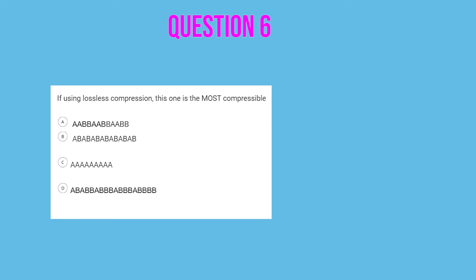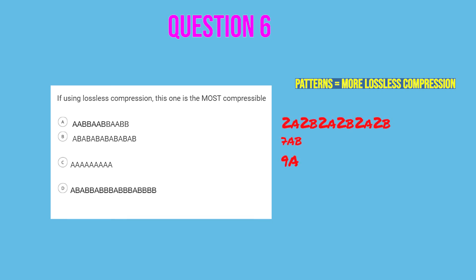Sometimes you'll see a question about lossless compression specifically. The concept to use is that the more patterns you have in your data, the more lossless compression you're going to get. They'll give you a bunch of examples, and the one with the most repeating patterns is the most losslessly compressible. In this case, C is the most losslessly compressible because it has the longest repeating pattern.